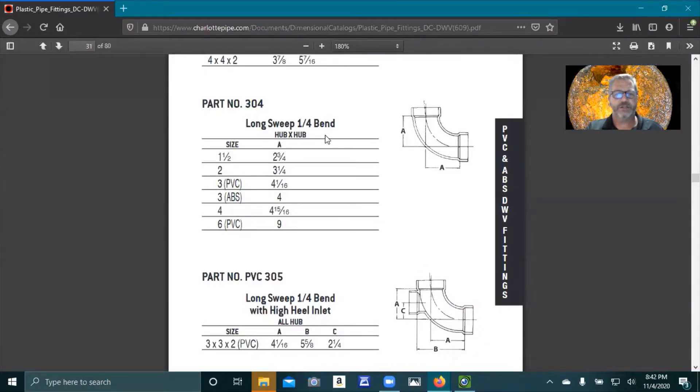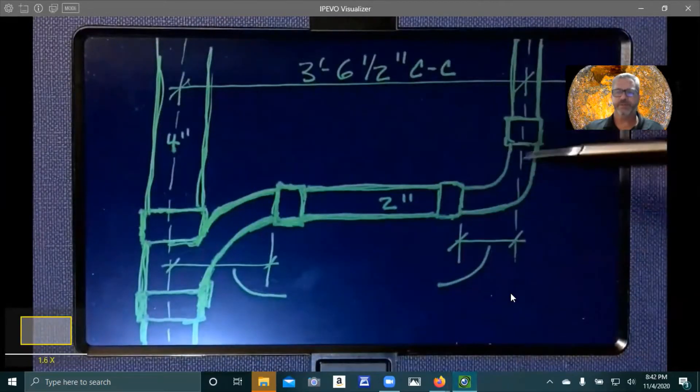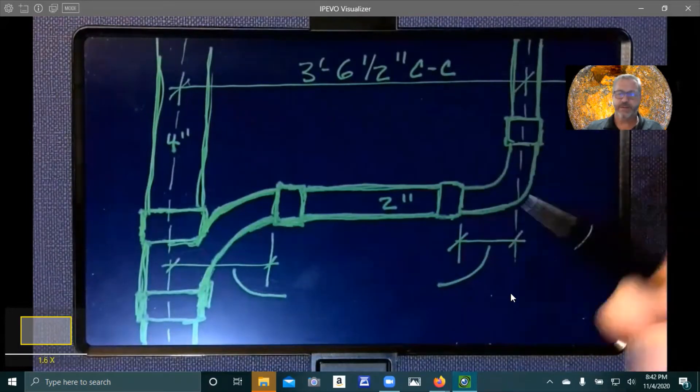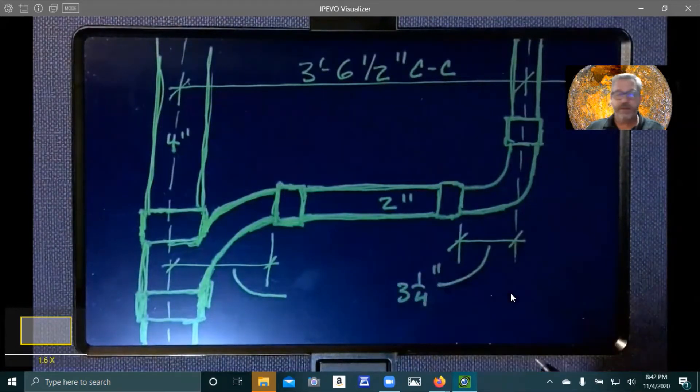Page 31. Here is the long sweep quarter bend or long turn quarter bend. And it's hub by hub. Here's your hub, here's your hub, right? All you have to do is take off that center mark to the back end of the hub. For two inch pipe, it's three and a quarter inches. So we take that three and a quarter. And here's that number. I said we take it from the center line to the edge of the hub back here. So that's that right there. And we go ahead and mark that out at three and a quarter.